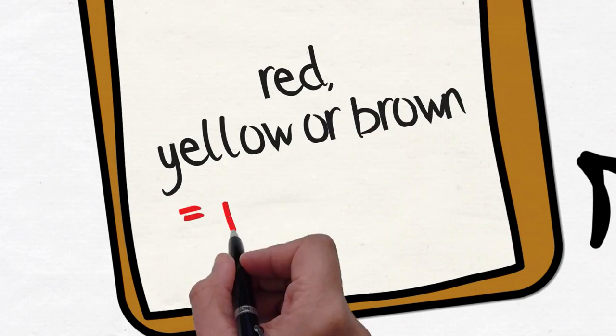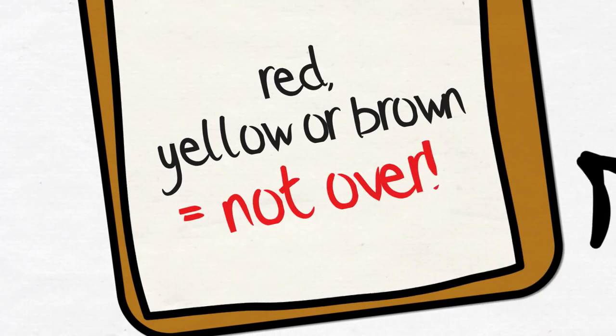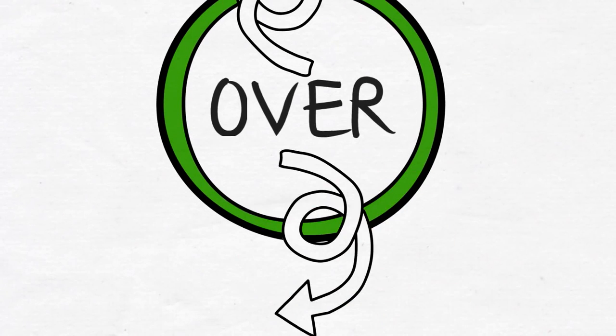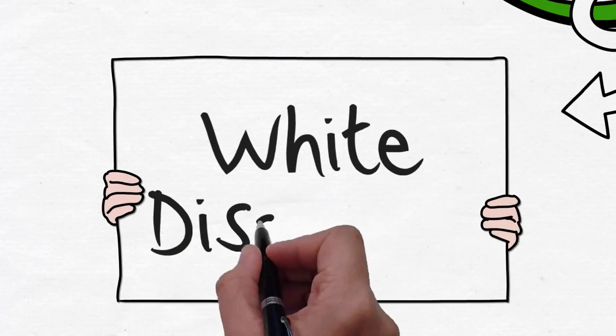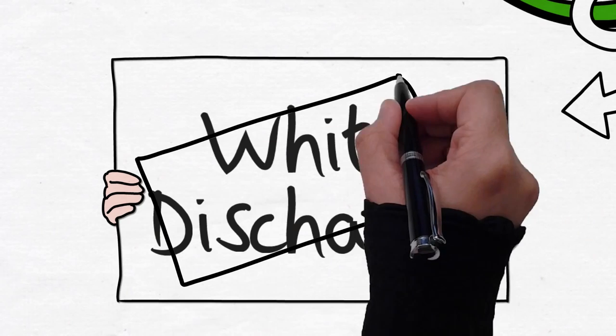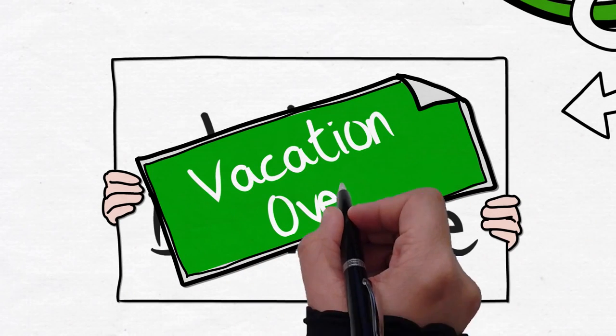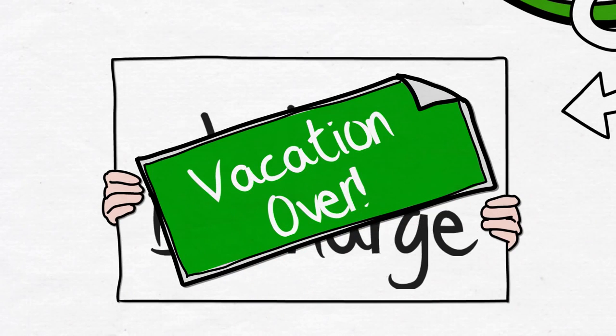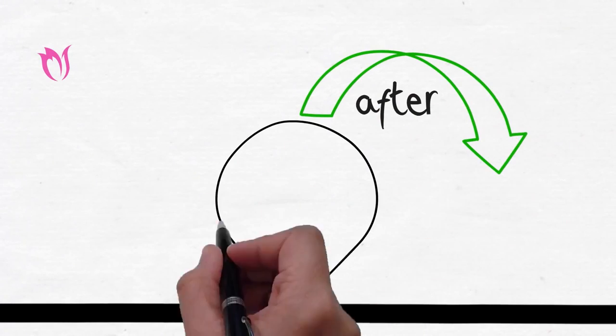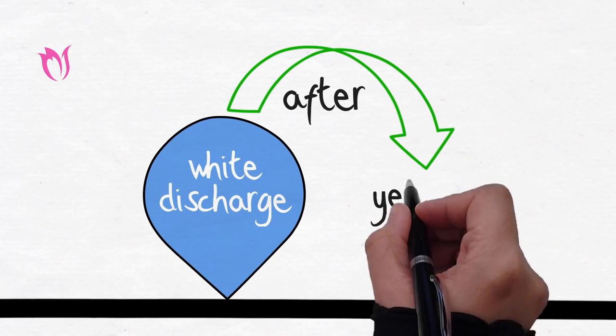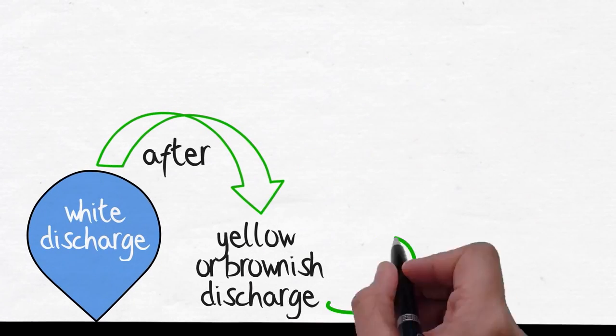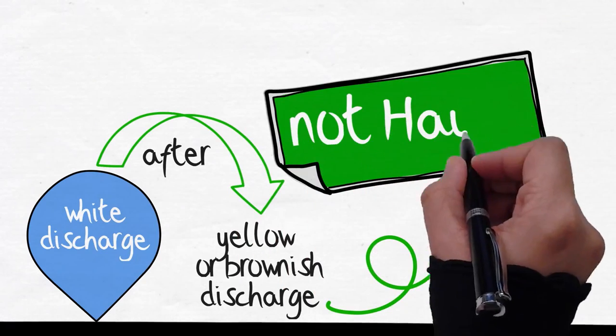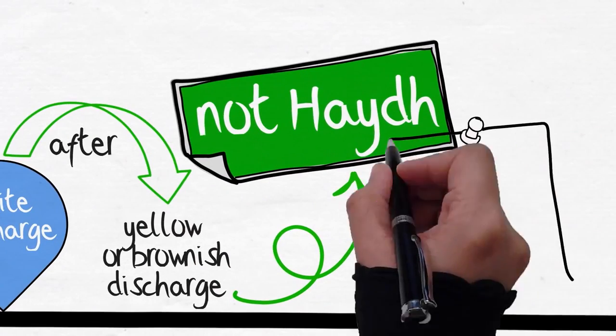Also, one of the distinguishing signs for the end of menstrual flow is the white discharge. The moment you see the white discharge, vacation's over, get back to prayers and fasting. And after this white discharge, any secretion, any yellowish discharge, just don't be concerned about it, because that is not considered haid or menstrual flow.